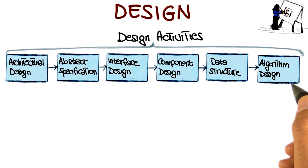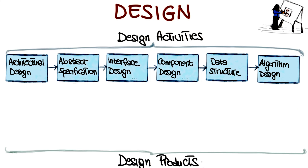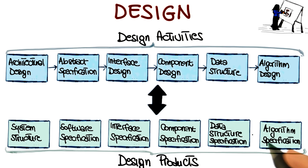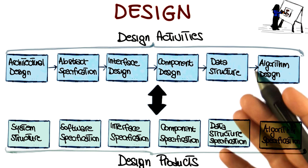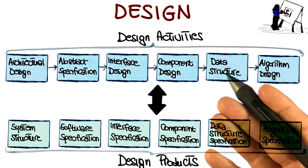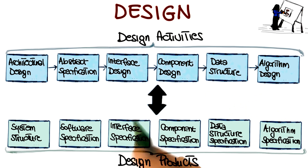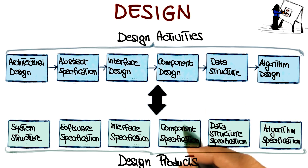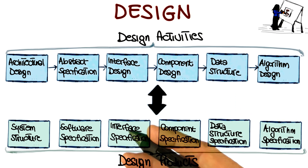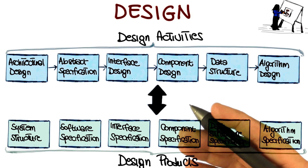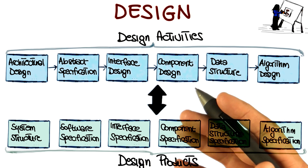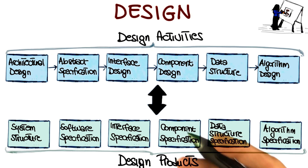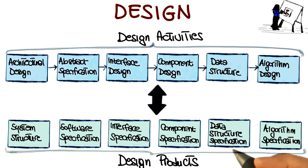And these activities result in a set of design products, which describe various characteristics of the system. For example, they describe the architecture of the system, so how the system is decomposed and organized into components, the interfaces between these components. They also describe these components into a level of detail that is suitable for allowing their construction.